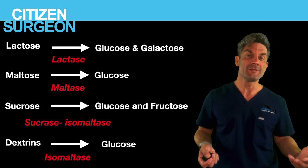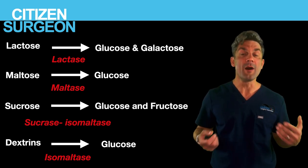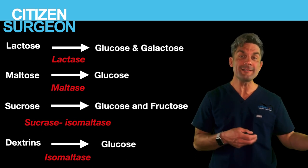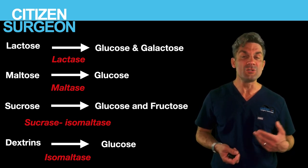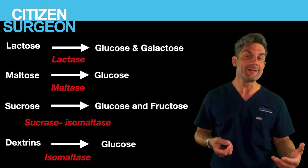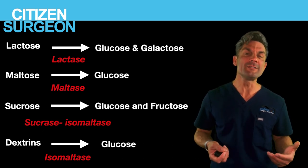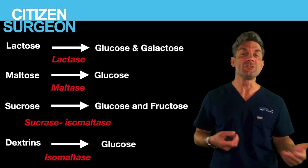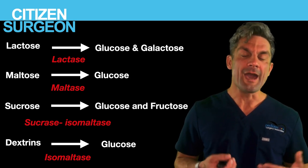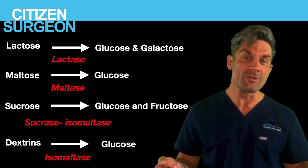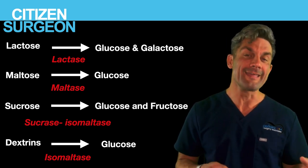Here are some key brush border enzymes that can come up on tests. Lactose is broken down by lactase into glucose and galactose. Maltose is broken down by maltase into glucose. Sucrose is broken down by sucrase-isomaltase into glucose and fructose. Dextrins are broken down by isomaltase into glucose. All large molecules — starches and sugars — are ultimately broken down into simple monosaccharides that can be absorbed.